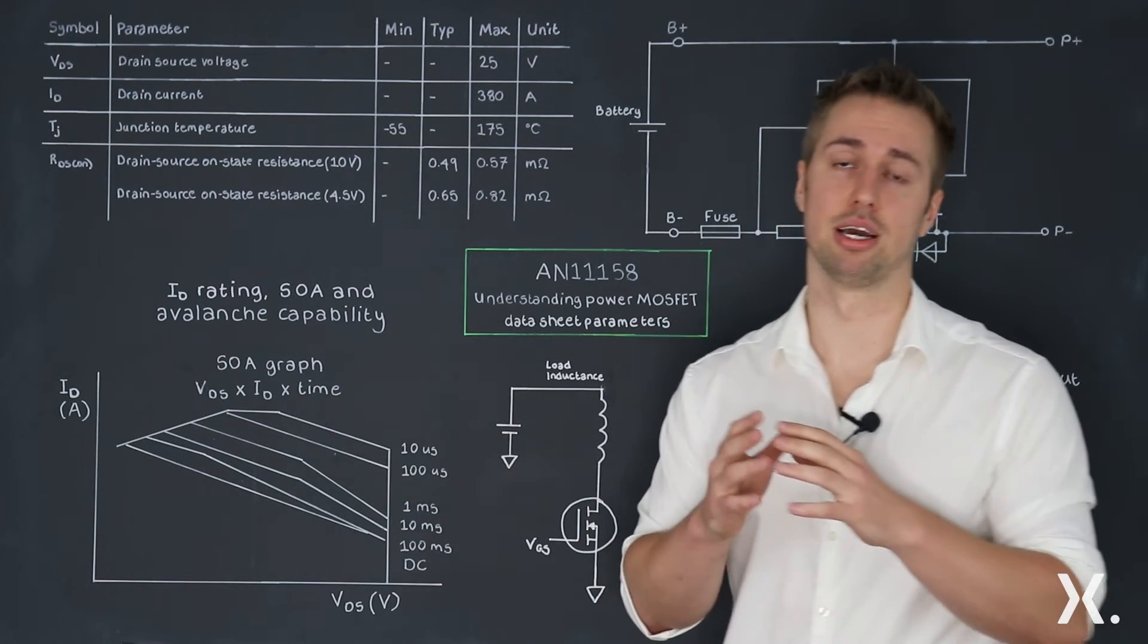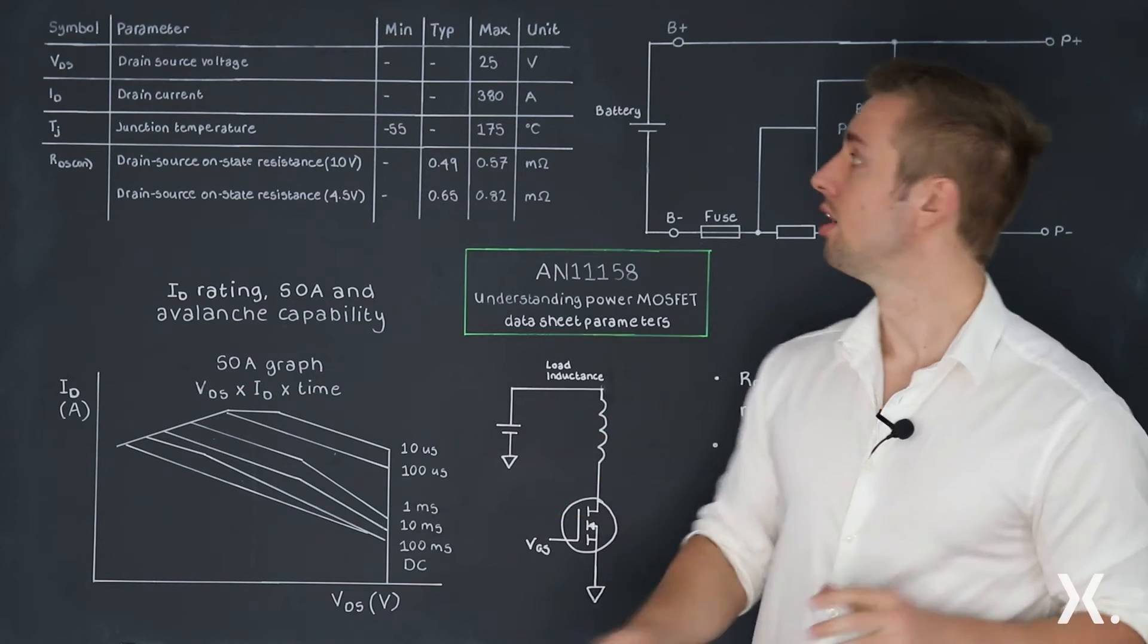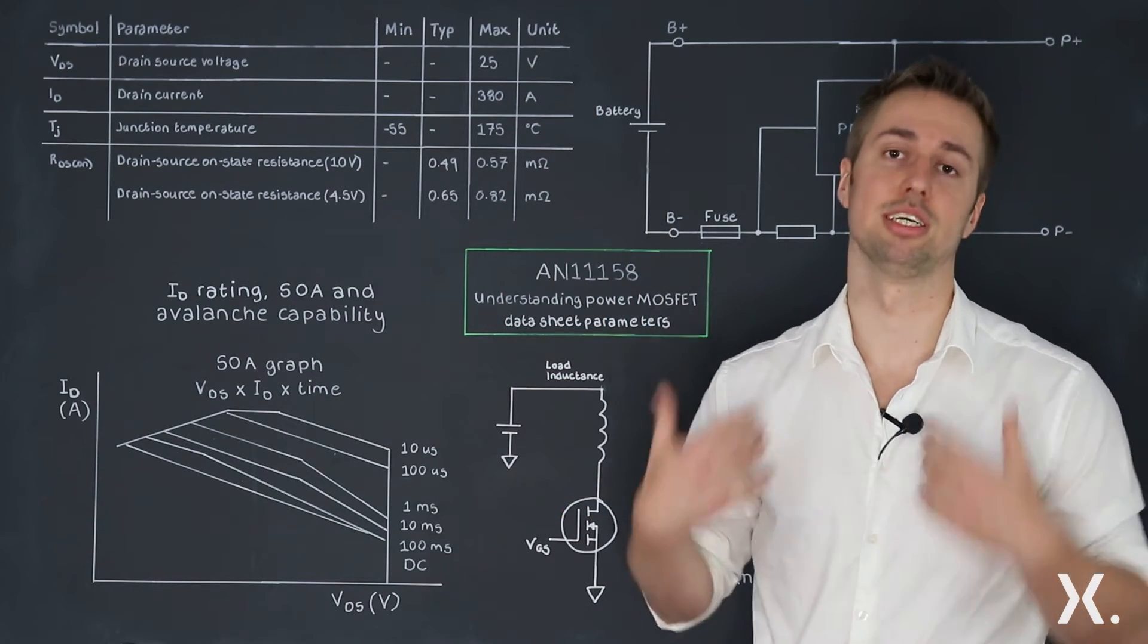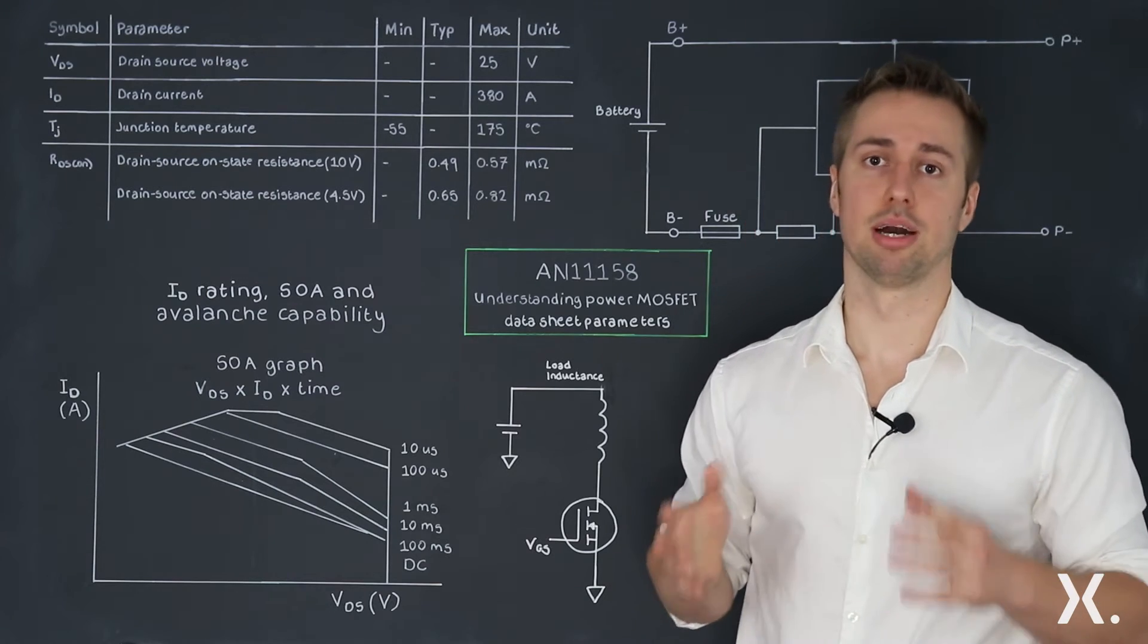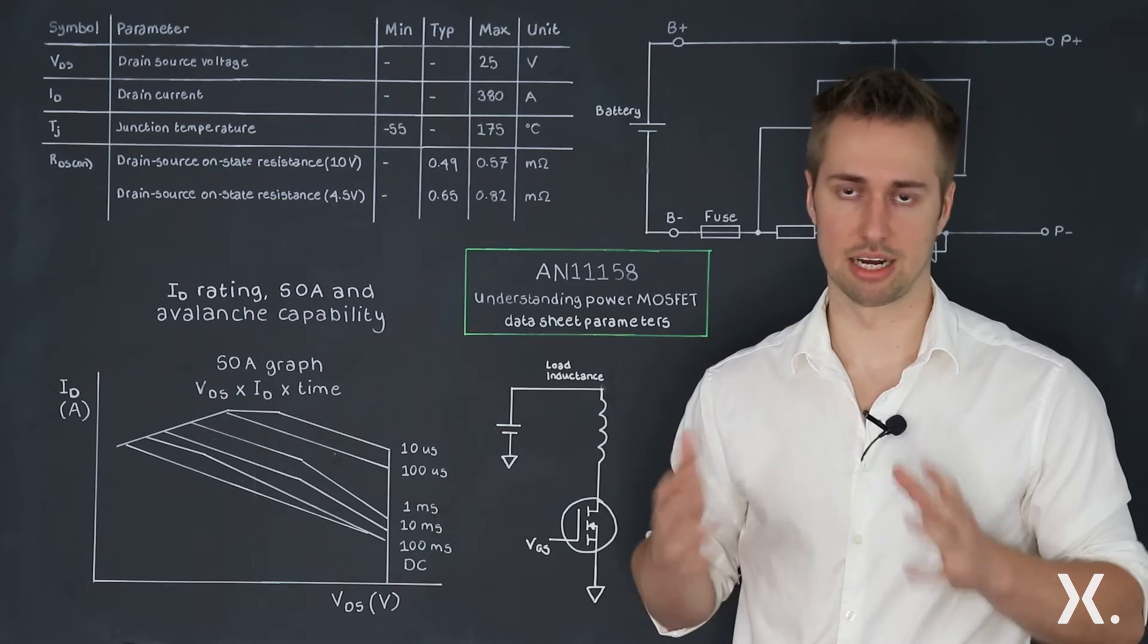However, it's also understandable why it's more difficult to compare SOA graphs, because this is a graph we have to compare between different MOSFETs, compared to single value parameters which are easy to compare. However, for the best of the application, you're better off comparing safe operating area graphs for soft switching e-fusers.